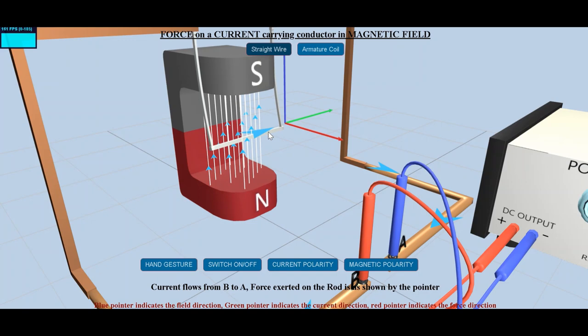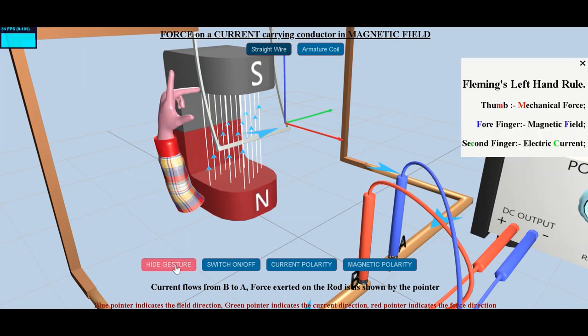The strength of the mechanical force that manifests in the wire depends on the length of the wire, amount of the current and the strength of the magnetic field. This force acting on the wire is called the Lorentz force.